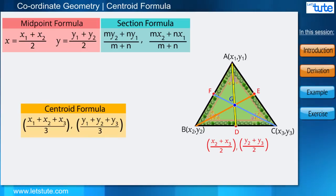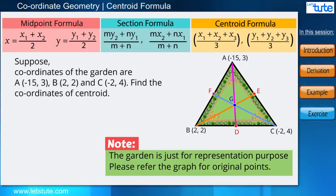And now we can see that we have come up with the centroid formula, and in this formula we do not require any of the midpoints. Now, here we are given the coordinates of points A, B, and C, and we have to find the centroid G of the garden.